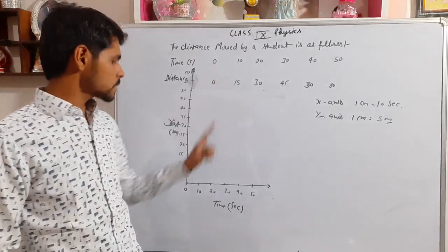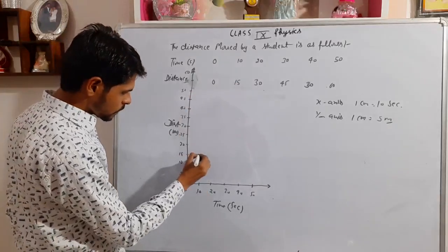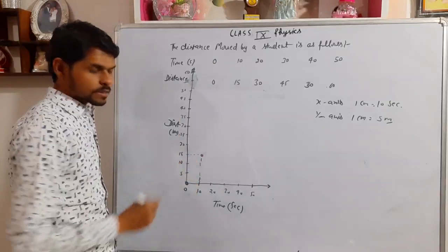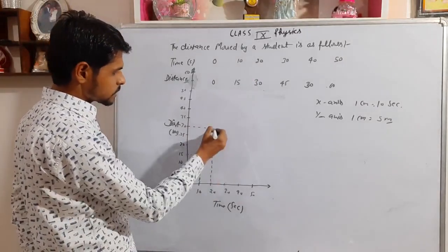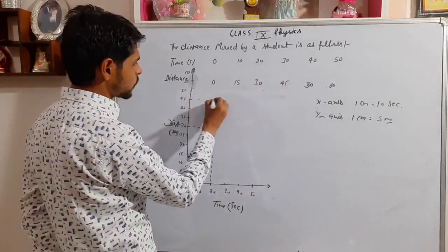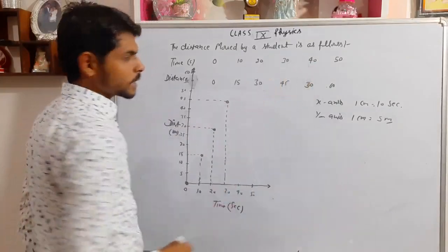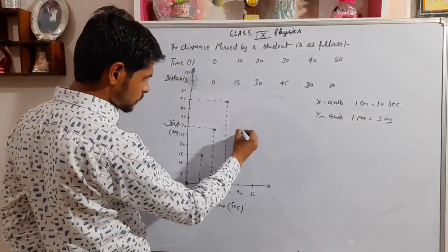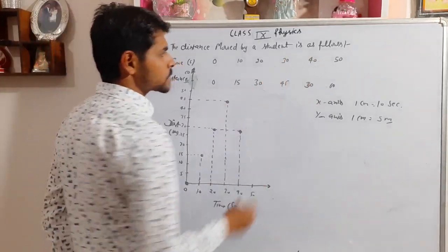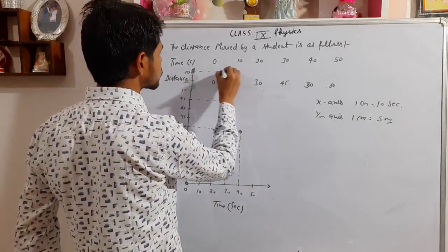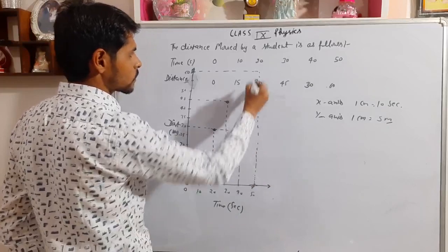Now we draw the graph by plotting the points. At time 0, distance is 0 — this is the first point. At 10 seconds, distance is 15 meters — this is the second point. At 20 seconds, distance is 30 meters — third point. At 30 seconds, distance is 45 meters. At 40 seconds, distance is 30 meters. At 50 seconds, distance is 60 meters — this is the last point.